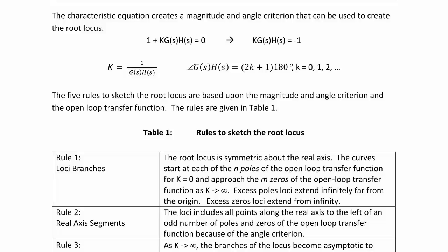The characteristic equation creates a magnitude and angle criterion that can be used to create the root locus. 1 + KG(s)H(s) = 0 yields KG(s)H(s) = -1, which means that K = 1/|G(s)H(s)|. This is the magnitude criterion. The angle criterion is ∠G(s)H(s) = (2k+1)180°, where k is the integer 0, 1, 2, etc.